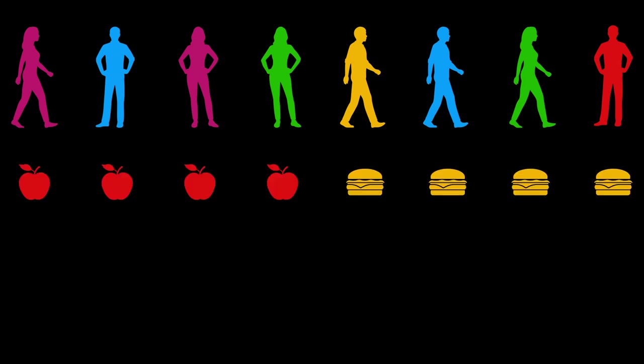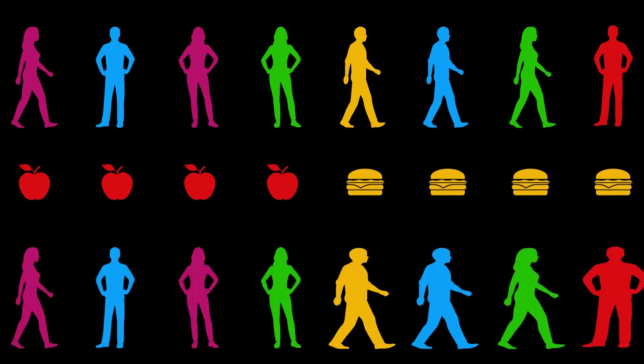Something I come across frequently in science is a situation where I have a bunch of different things, say people, and we take two measurements on each of those people, say before and after some type of intervention. That intervention might be some type of medication we've given the people or perhaps we've changed their diet. So before we might look at their weight and after we might look at their weight, or we might look at cholesterol before and after those interventions.